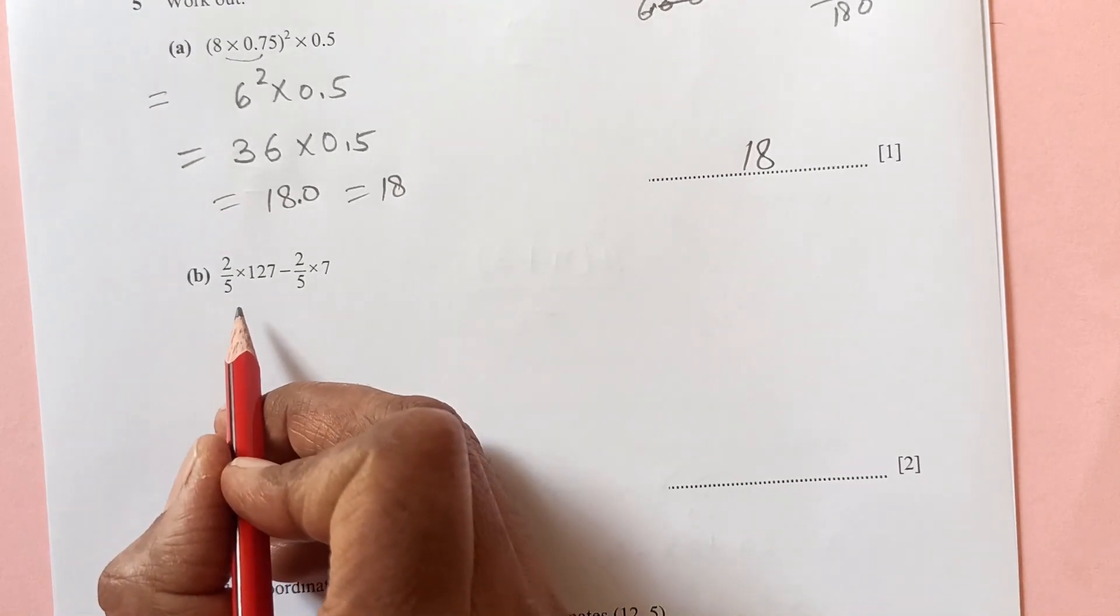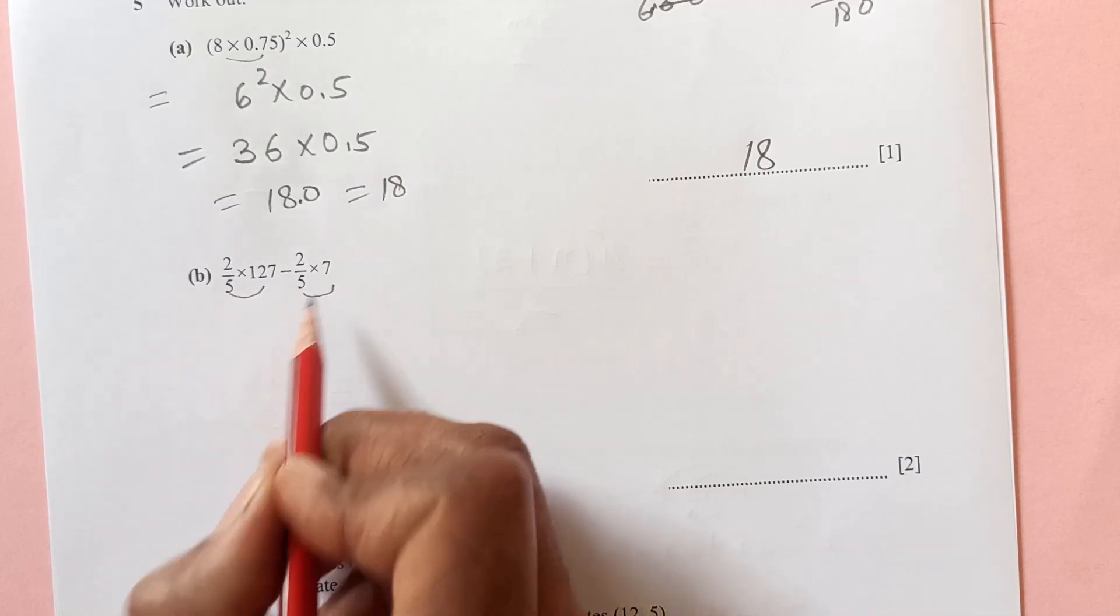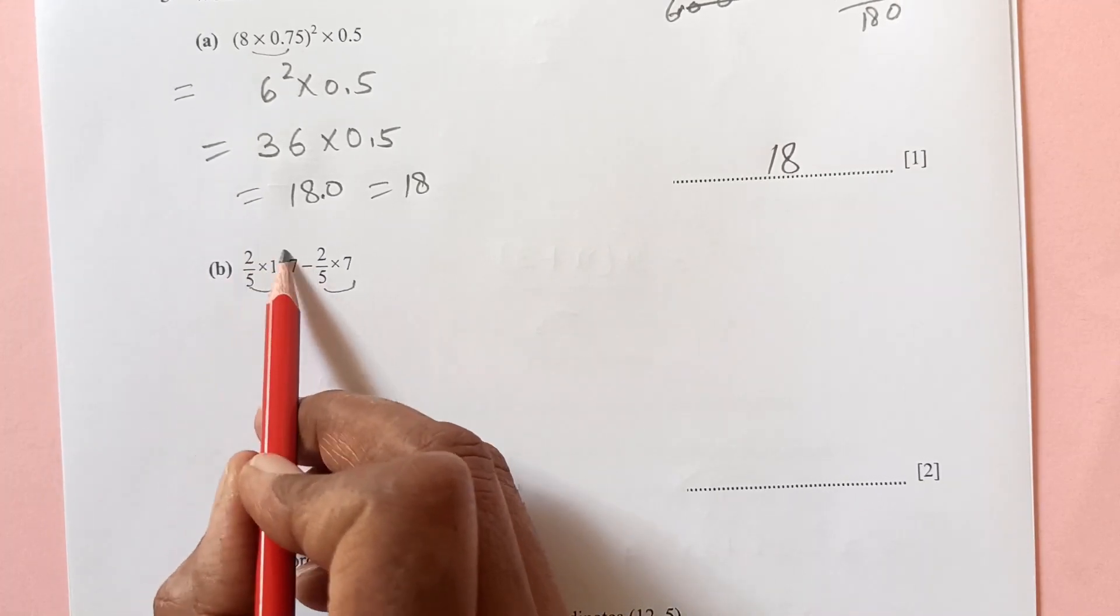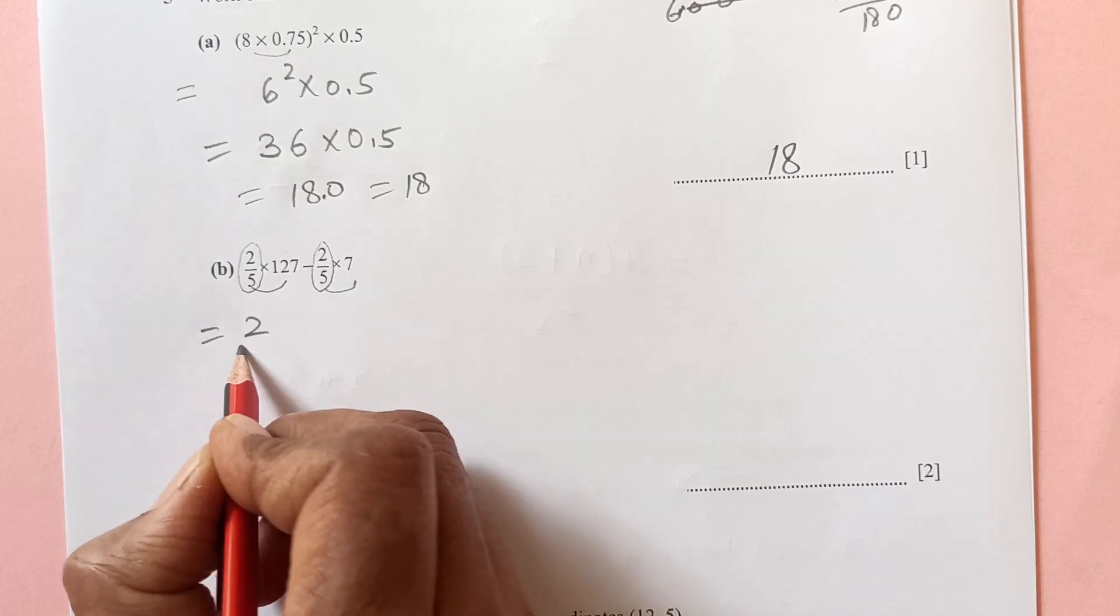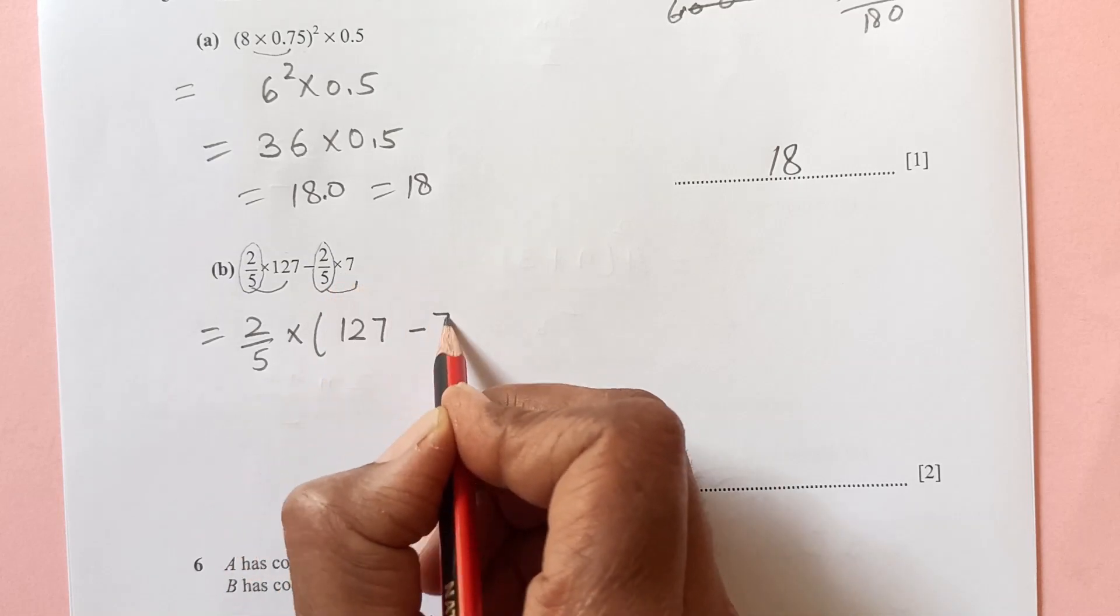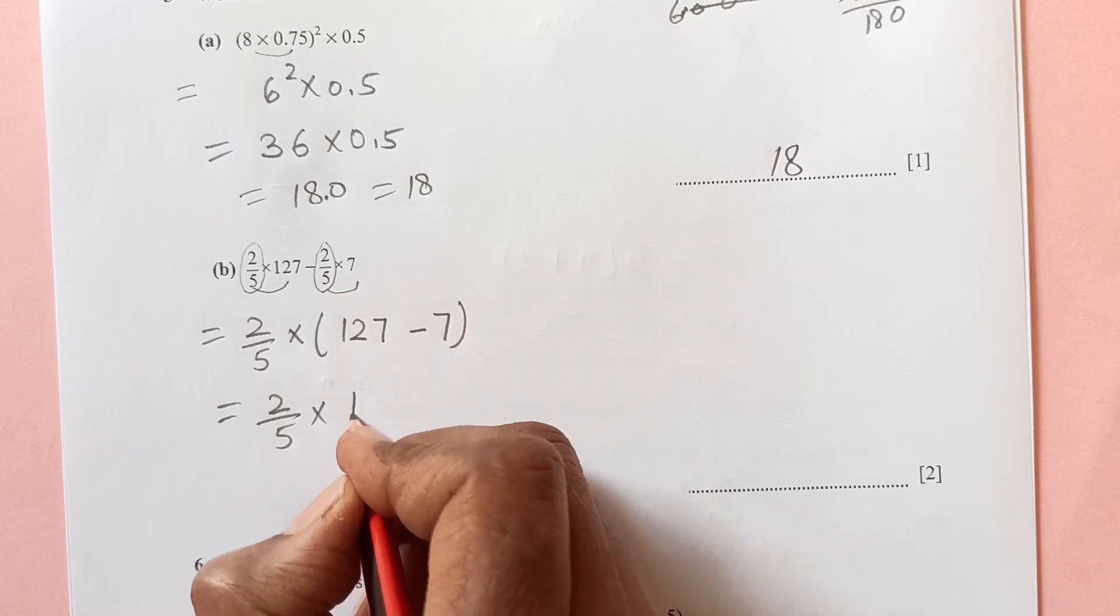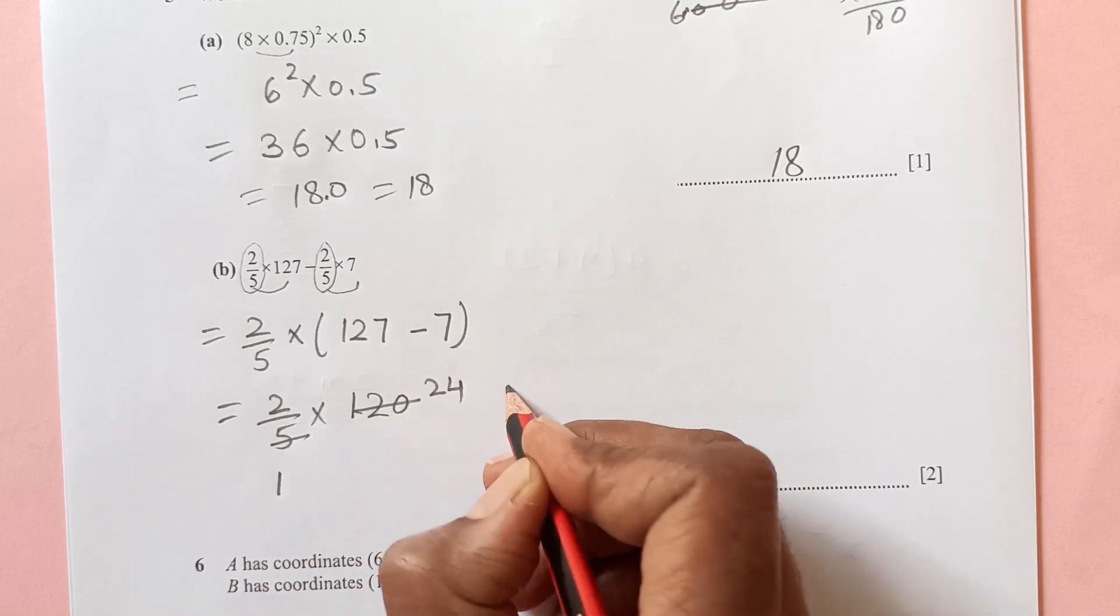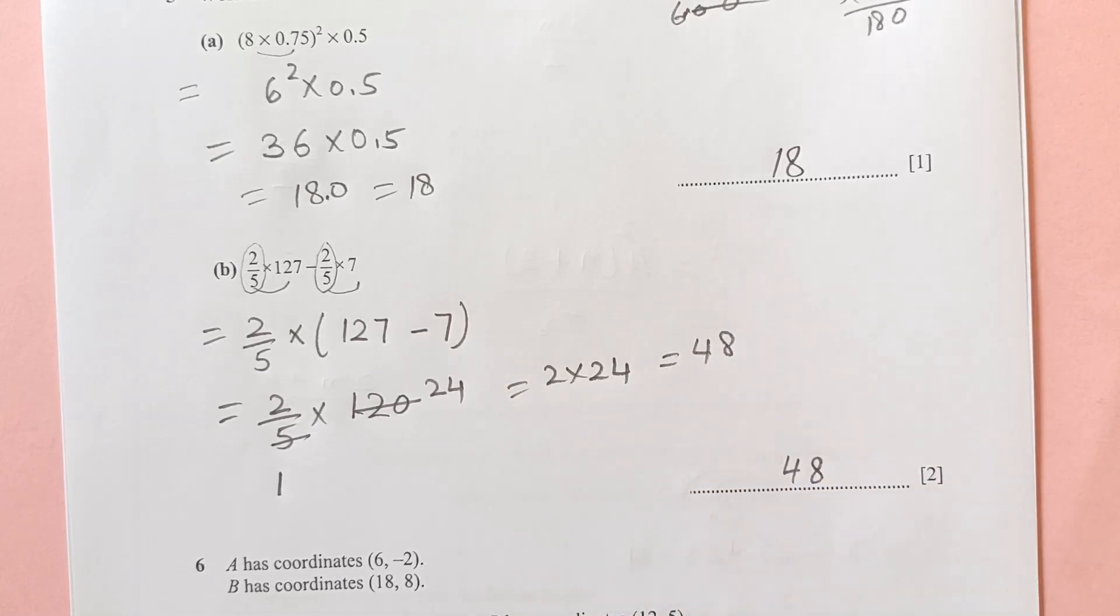The second b part here, you see 2 over 5 times this is 1 term minus, this is 2nd term. Remember that terms are always separated by plus and minus sign. Out of this you see 2 over 5 is common in both, so I will take this out. 2 over 5 times, in bracket we have 127 minus here we are left with 7. 2 over 5 times 120. 27 minus 7 is 120. 5 times 2, 5 times 4, that is 2 times 24 which is 48. Final answer is 48.